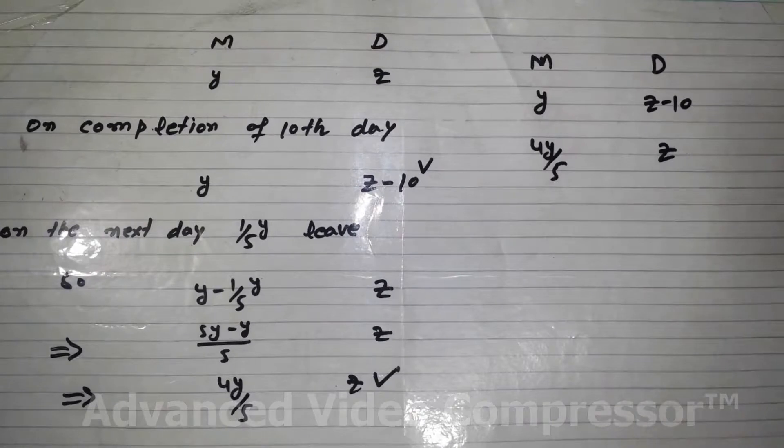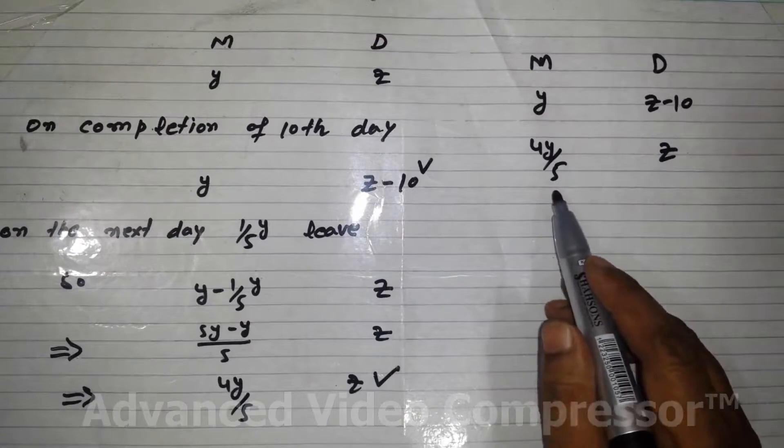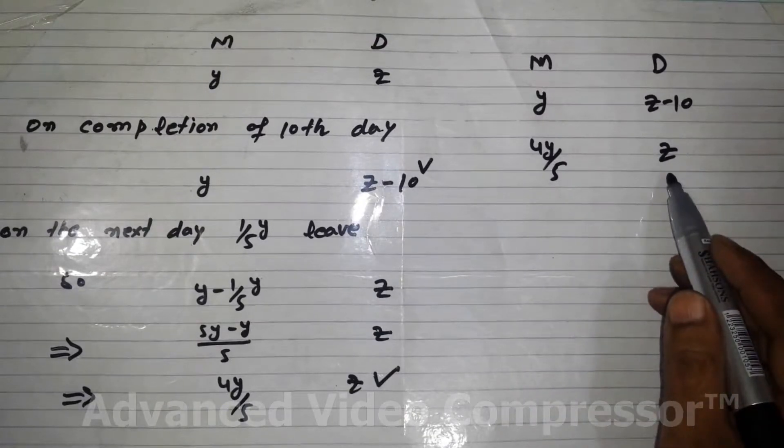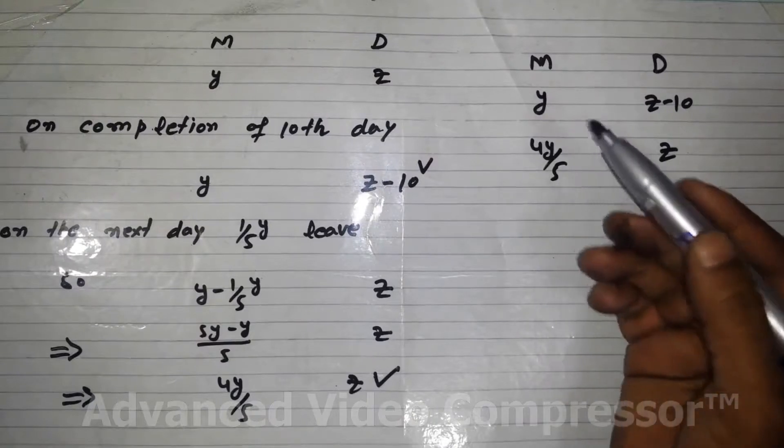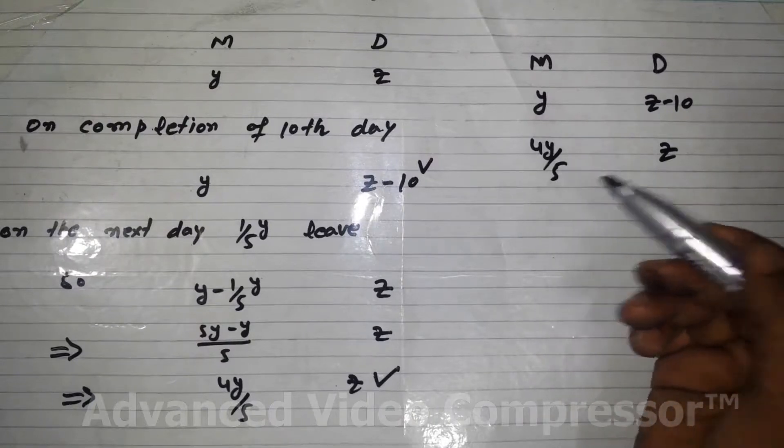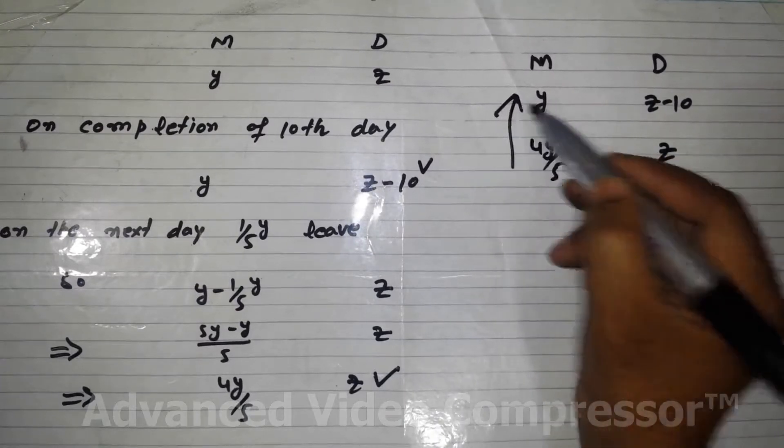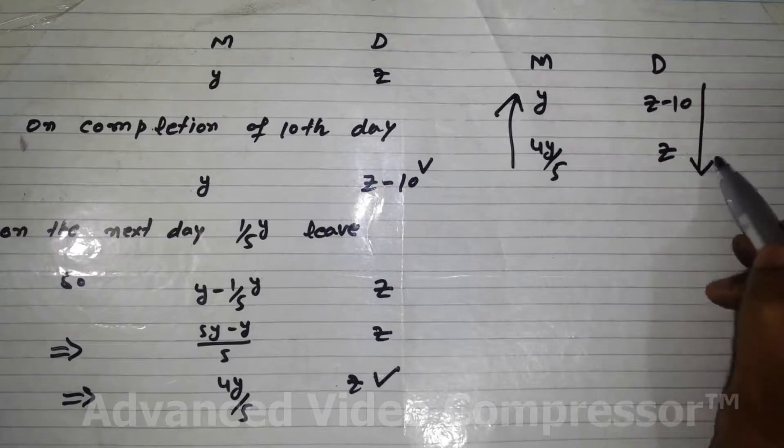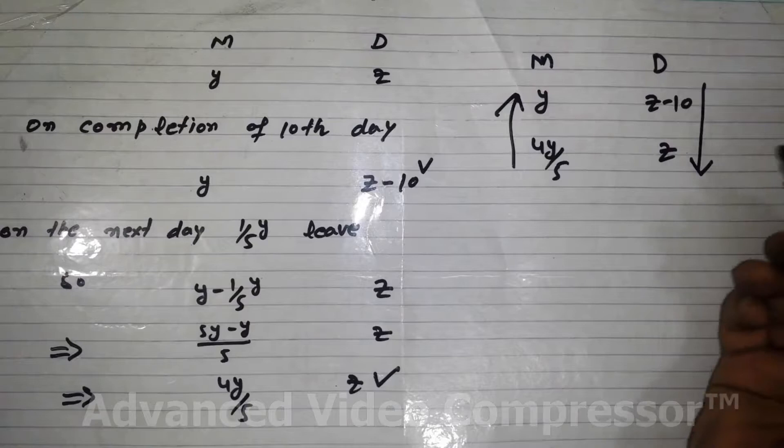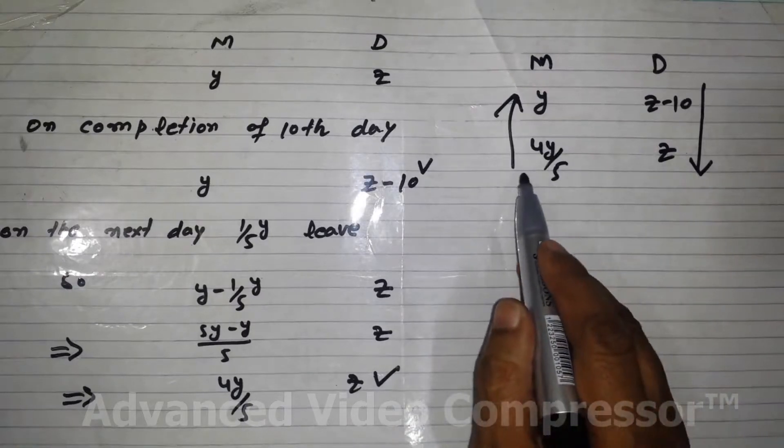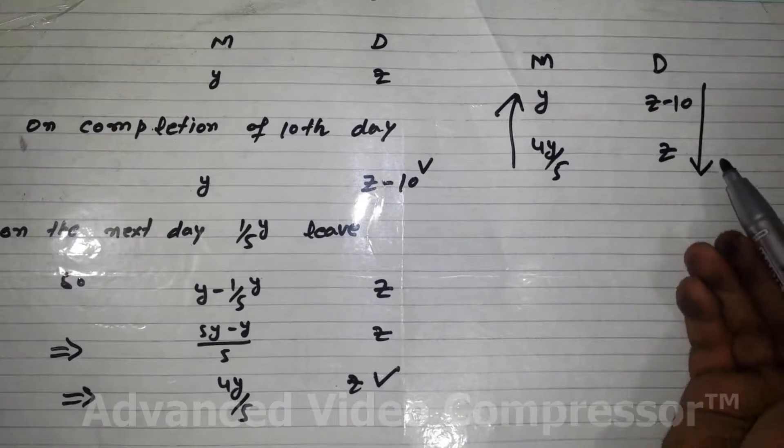This is the problem of inverse proportion because if men increase, the provision will be sufficient for less days. If we want to increase the number of days, we have to make the number of men less. So on one side we can put arrow upside and other side arrow downside because one thing increases, other thing decreases.